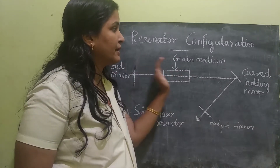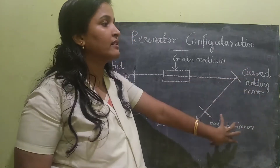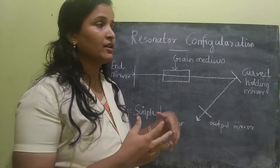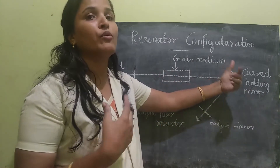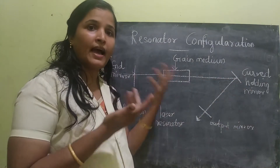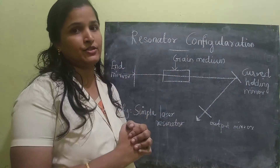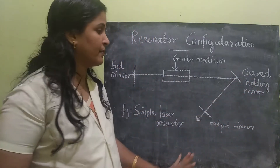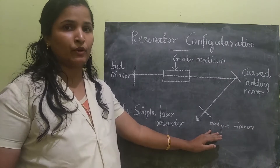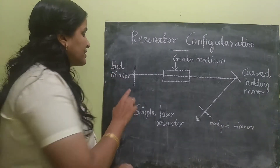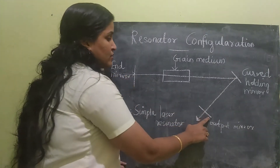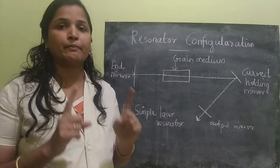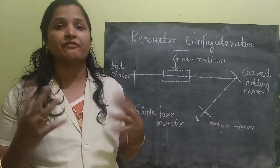The reason for the name 'gain medium' is that the active medium increases the gain of the laser radiation. In between the end mirrors, we have many mirrors. Using those mirrors, the laser light moves front and back and gains energy. Here we have a curved folding mirror and finally the output mirror. Any of the end mirrors — there are 2n mirrors — any of the end mirrors will be partially reflecting.